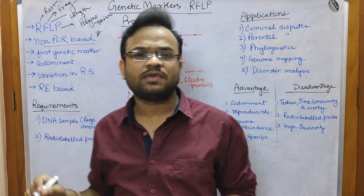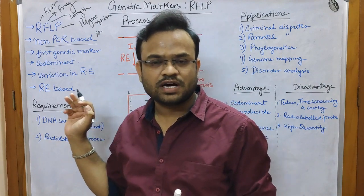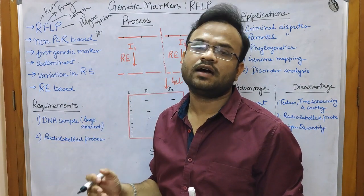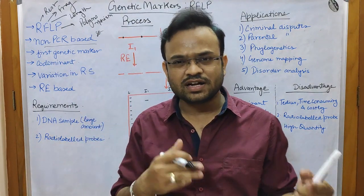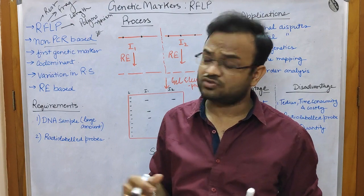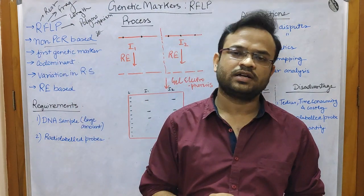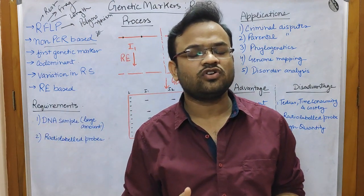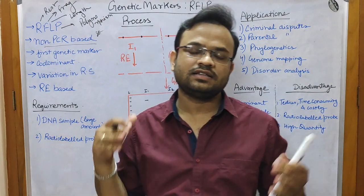RFLP is one of the first genetic markers. After this, other markers such as RAPD, SSR, and SNPs were identified. RFLP is also codominant, meaning this marker can recognize the difference between a homozygous DNA and a heterozygous DNA strand.